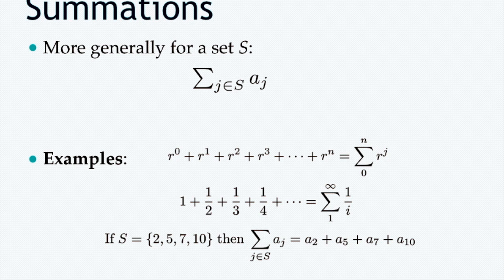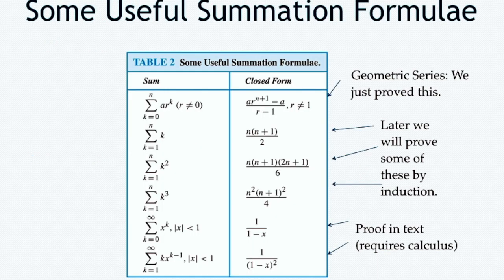If you have a set S with elements like {2, 5, 7, 10}, then the summation over j belonging to S gives a2 + a5 + a7 + a10. There are also useful summation formulas and tables you can refer to for solving summation equations.